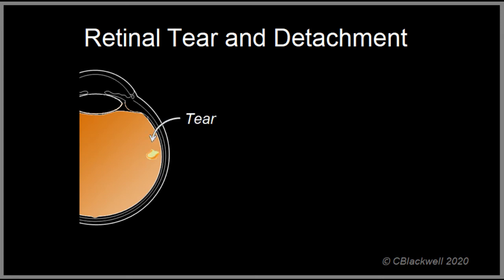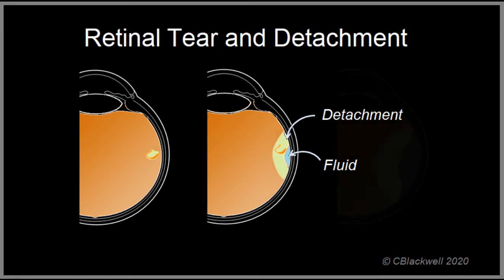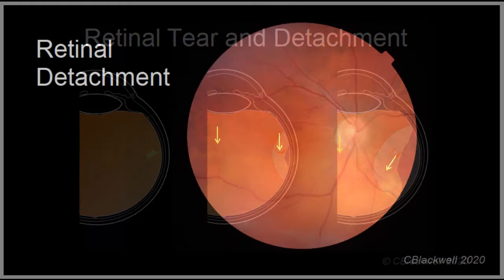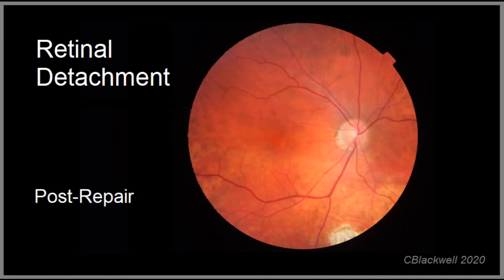Most retinal detachments start with a tear in the peripheral retina. The tear creates a hole that allows fluid to get underneath the retina, causing the retina to detach from the wall of the eye. As it pulls away from its supporting cell layers, it loses function, and in a matter of hours to days it dies — thus it is a vision-threatening problem. In this photo, the pale area in the lower half of the image is a detachment; the arrows mark its upper edge. These are mostly repairable: in the after image, the retina is reattached. The earlier you get to it, the easier it is to repair.